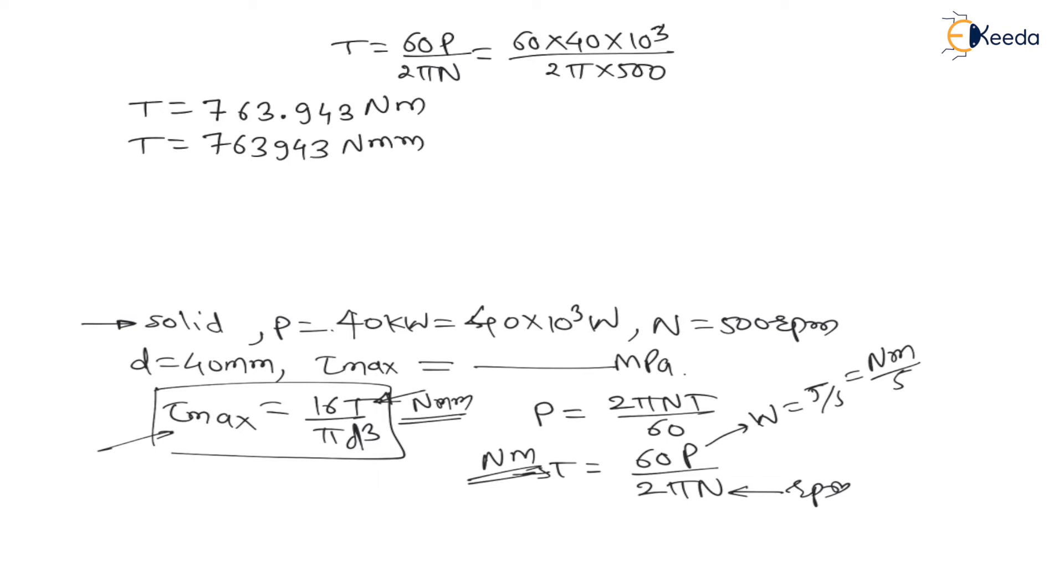Convert into newton mm. Therefore torque is 763.943 newton mm. Now use the maximum shear stress formula, that is τmax = 16T divided by πd³. Therefore 16 into 763.943 divided by π into 40³. If I solve this I will get near about 60.729 newton per mm square.